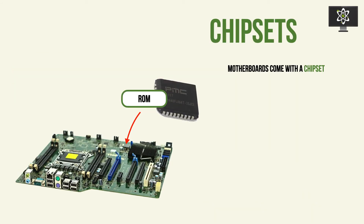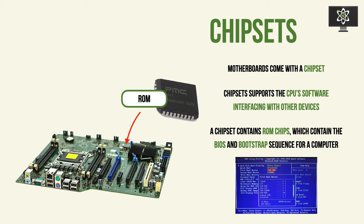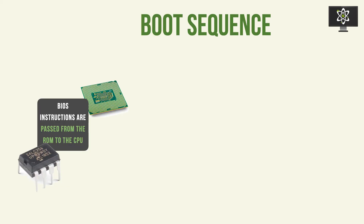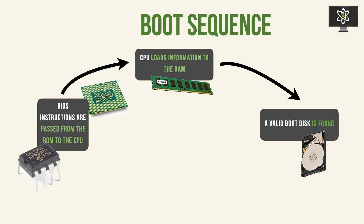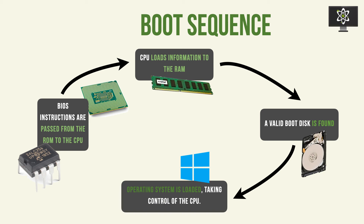Motherboards always come with chipsets. These are essentially ROM chips, and chipsets are responsible for the interfacing of the software between the other devices like the CPU, video cards, RAM, and so on. The chipset contains ROM, which as mentioned contains two key components: the BIOS program and the bootstrap sequence for a computer. To recap the boot sequence: the BIOS instructions are passed from the ROM to the CPU; the CPU loads that information onto the RAM; then it looks for a valid boot disk where your operating system is stored, and boots that operating system, loading it to take control of the CPU. Every single motherboard comes with a ROM — it is really the bread and butter of the initiation of a computer.